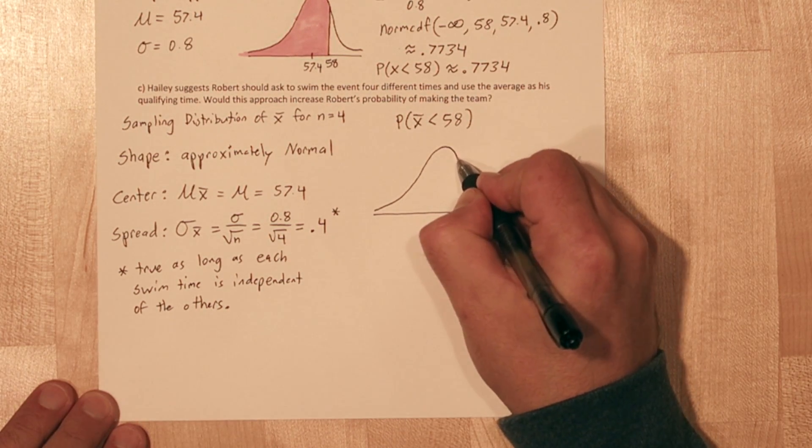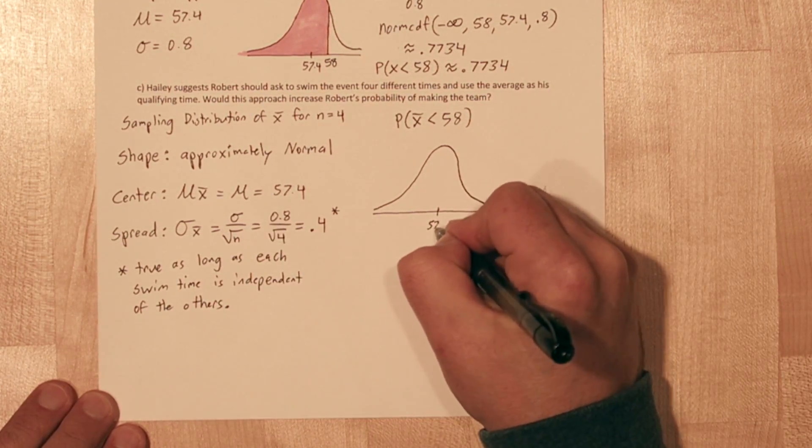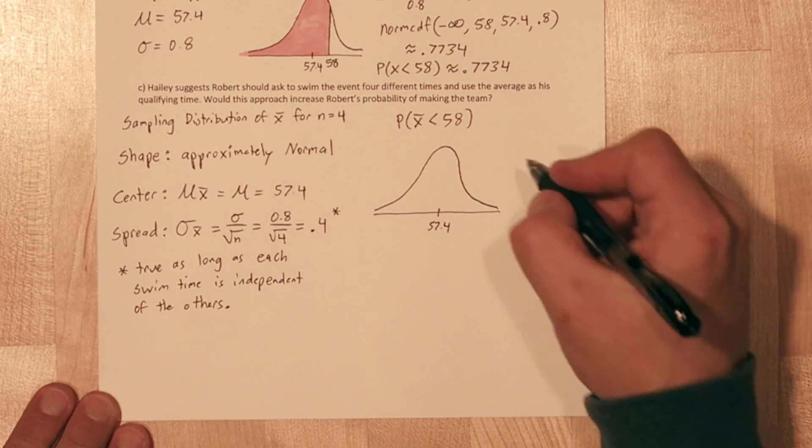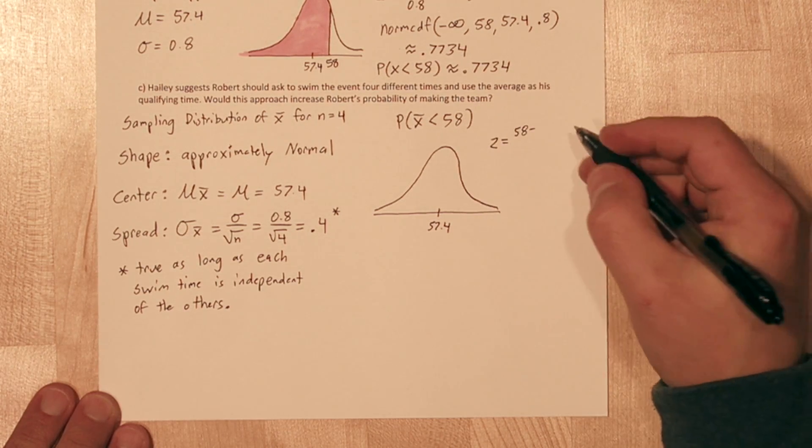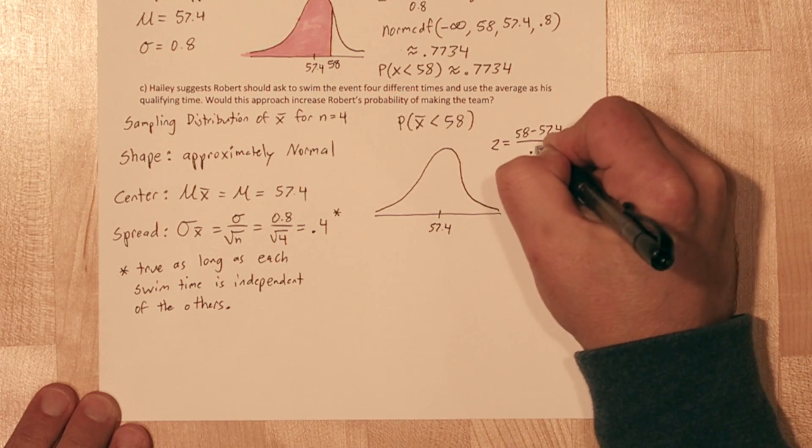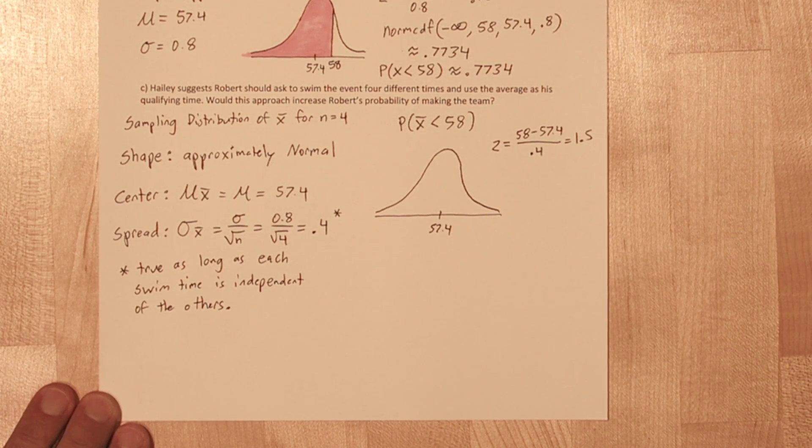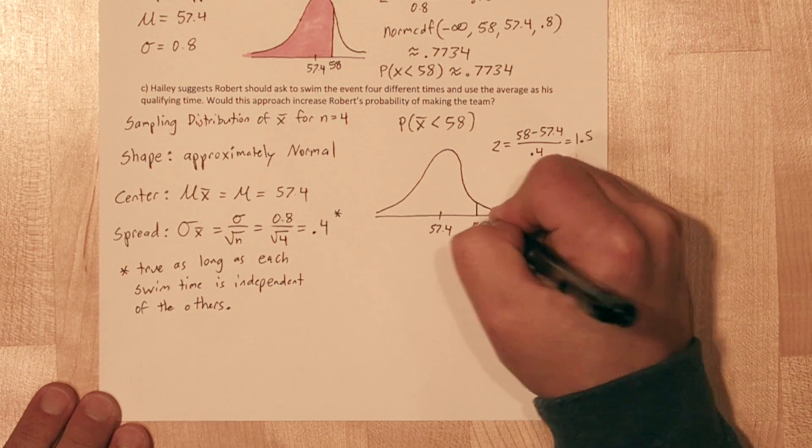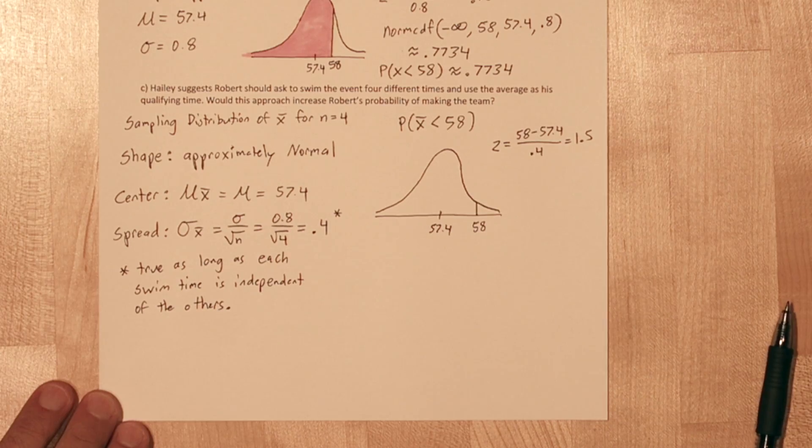This time we're interested in the probability that our sample mean of the 4 swims is less than 58. So the shape is still approximately normal, so let's draw that. The center is still at 57.4, but our standard deviation has changed to 0.4. To figure out where 58 is, we need to calculate the z-score again. So z equals 58 minus 57.4, our mean, divided by our new standard deviation, 0.4. This time we get a z-score of 1.5, so 58 is 1.5 standard deviations above the mean. Since we're interested in the area to the left of that, let's shade it in.